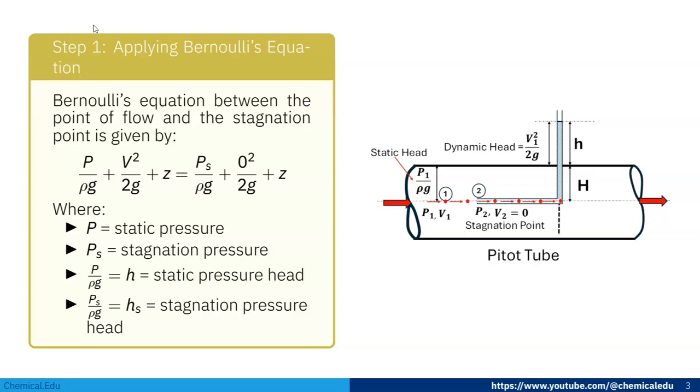At point 1, the pressure is p. So p/(ρg) + v²/(2g) + z1 equals p_s/(ρg) + 0²/(2g) + z2. Now z1 and z2 cancel out, and v2 is zero, so this term cancels out.